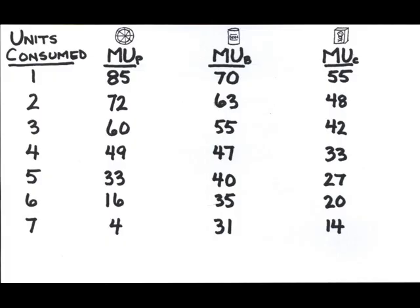Notice that for each product, the law of diminishing marginal utility holds. And remember, our consumer has $100, price of pizza is $12, price of beer is $8, and the price of cigarettes is $4.